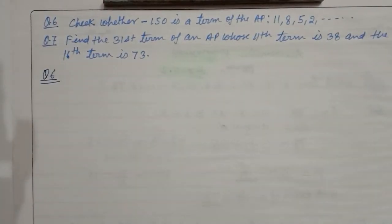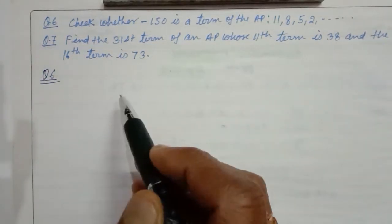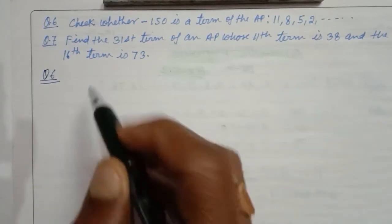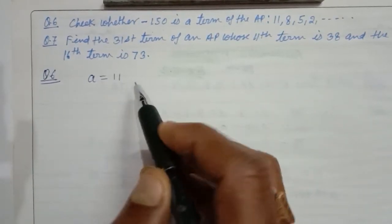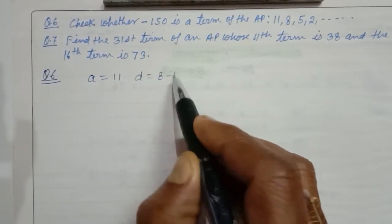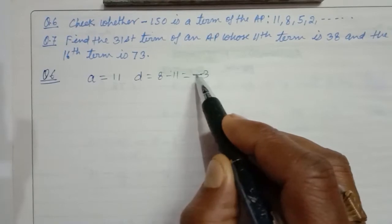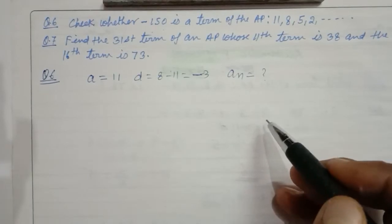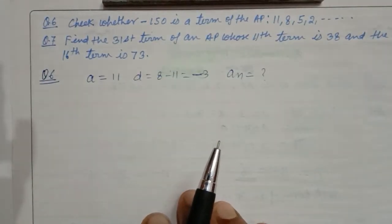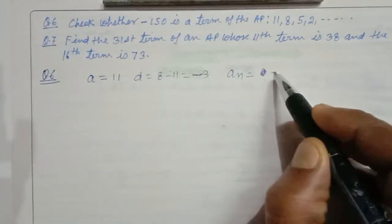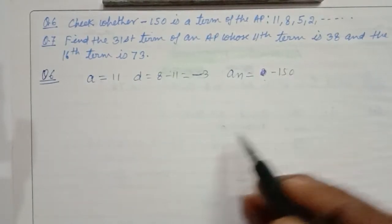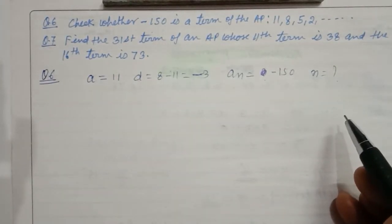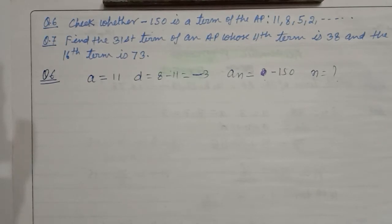Solution of question number 6: Check whether minus 150 is a term of the AP۔ Students ہمیں find کرنا ہے کہ minus 150 جو ہے وہ اس AP کا کوئی term ہے یا نہیں۔ a is equal to 11، d is equal to 8 minus 11 یعنی minus 3۔ ہم an کی value find کریں گے۔ اگر students an کی value ایک whole number آتی ہے تو یہ اس کا کوئی term ہوگا، ورنہ نہیں ہوگا۔